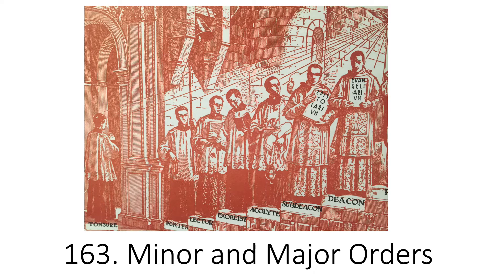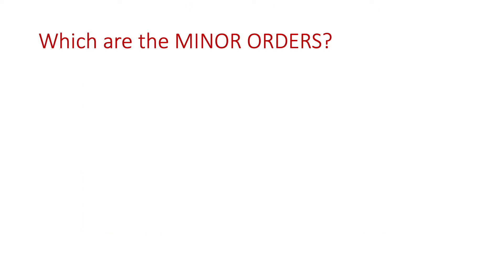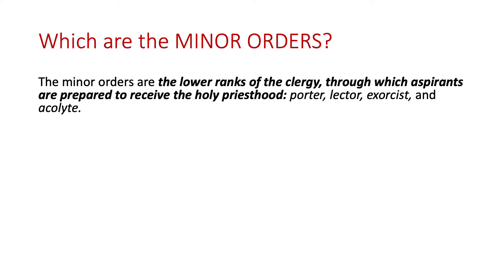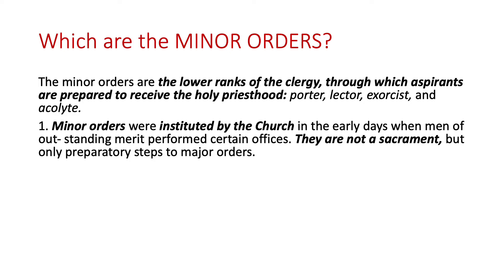Lesson 163: Minor and Major Orders. Which are the minor orders? The minor orders are the lower ranks of the clergy through which aspirants are prepared to receive the holy priesthood: porter, lector, exorcist, and acolyte. Minor orders were instituted by the church in the early days when men of outstanding merit performed certain offices. They are not a sacrament but only preparatory steps to major orders.